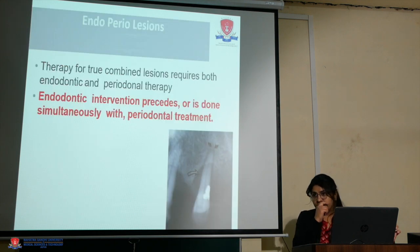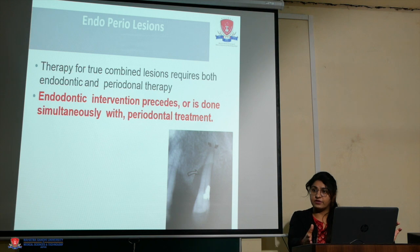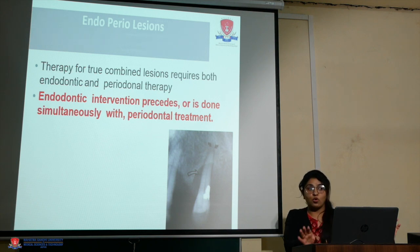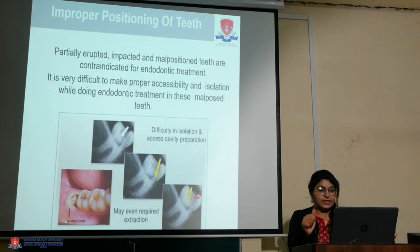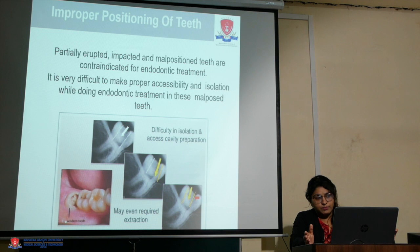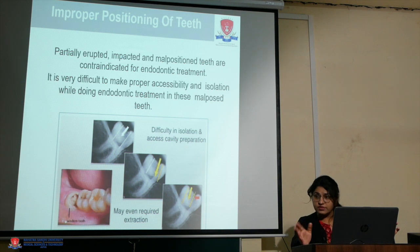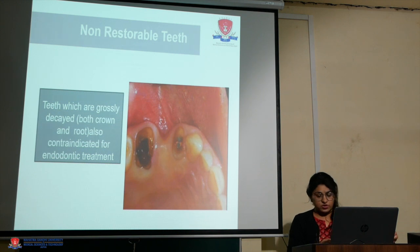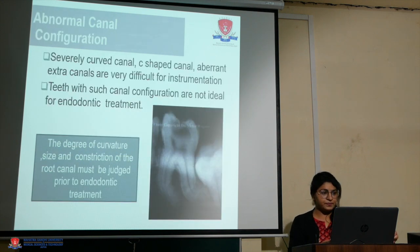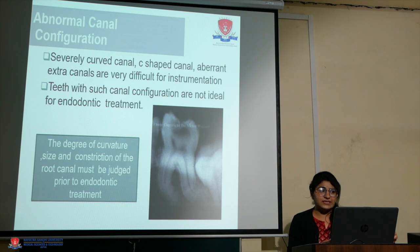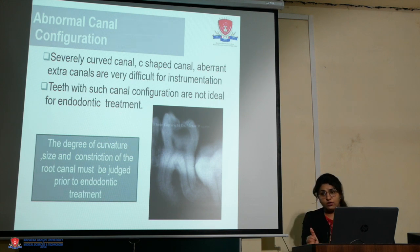For endo-perio lesions, endodontic treatment alone is not sufficient — simultaneous periodontal therapy is also mandatory. Malpositioned, impacted, or partially erupted teeth make treatment difficult, so you must determine whether to proceed with treatment or advise extraction. If there is no restorability, there is no point doing the treatment. Abnormal canal configurations, such as severely dilacerated roots, can also pose difficulty and you may need to consider extraction.